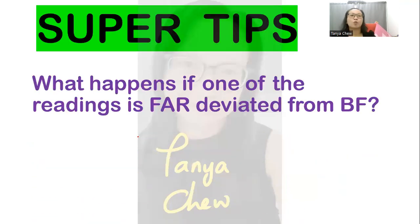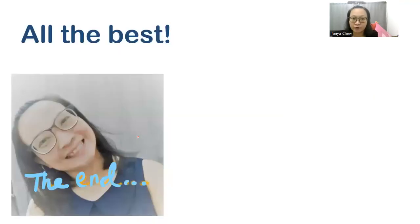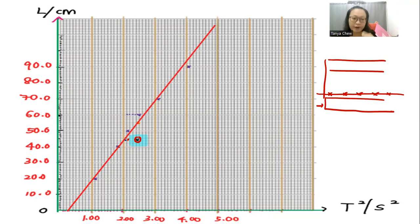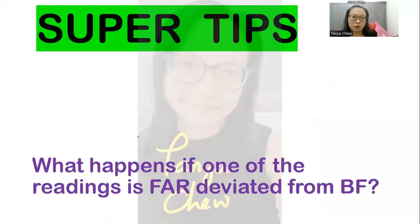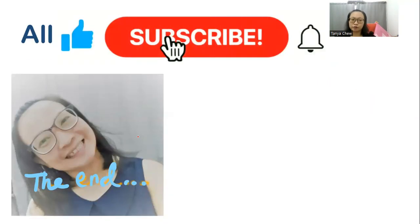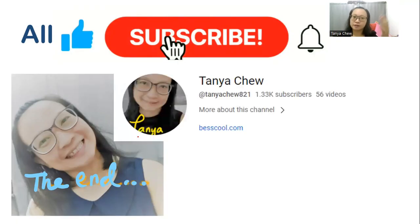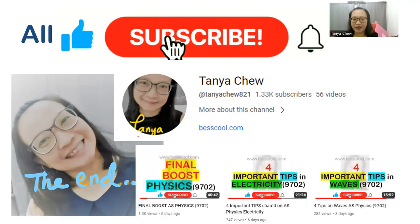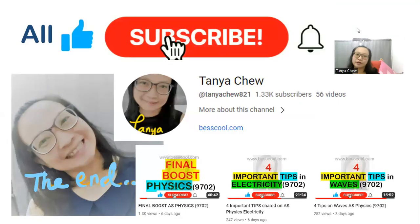Super tips here. What happens if one of the readings is far deviated from the best fit? That is what I explained just now. Please make sure that you subscribe to my YouTube video. I wish you all the best in doing your paper three graph part. Subscribe to my YouTube video for more tips, more examples, more super tips to be shared on my YouTube channel. You can also have a look at all the videos I shared to help you boost your AS physics as well as your A-level physics. I wish you all the best. See you in the next video.